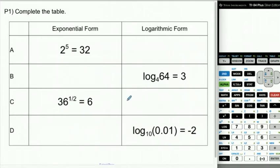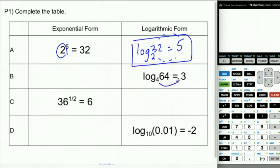Go ahead and try P1, same concept. So 2 to the fifth is 32. That's definitely true. If you rewrite it, you're going to have log base 2 of 32 equals 5. Because it's 2 to the fifth gives you 32. So there's your log form. Here we have 4 to the third gives you 64, which is definitely true.